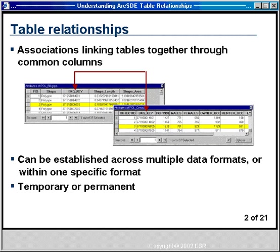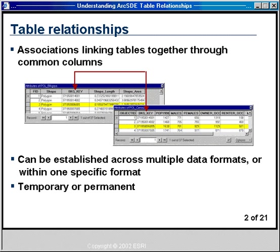Associations can be established between multiple data formats. For example, you can create a link between a shapefile and an ARC info table, or between a feature class in a personal geodatabase and a table in an ArcSDE enterprise database. These relationships can be temporary, existing only within a specific ArcMap document, or permanent, available to multiple geodatabase users.